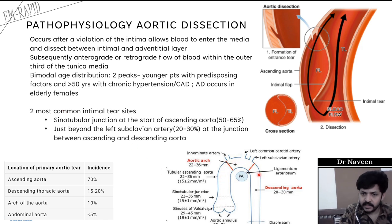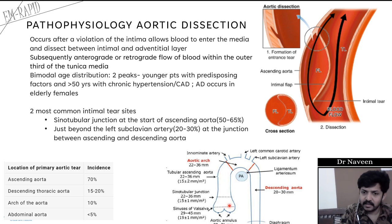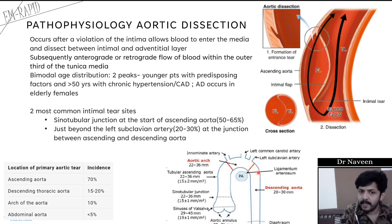Studies have found that the primary location of aortic tear is usually in the ascending aorta — specifically at the sinotubular junction, which is the start of the ascending aorta. Around 50 to 65% of aortic dissections happen here. The second common point is just beyond the left subclavian artery, where around 20 to 30% of dissections occur at the junction between the ascending and descending aorta.